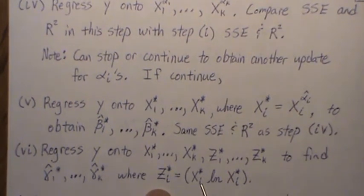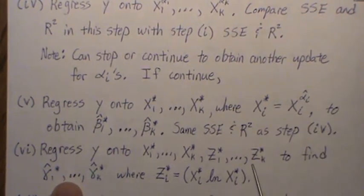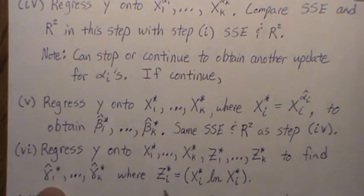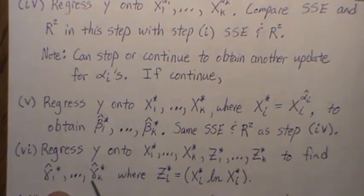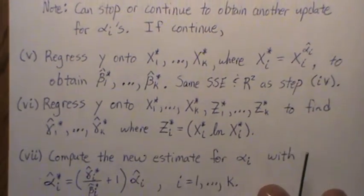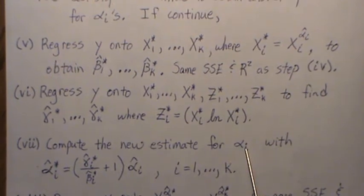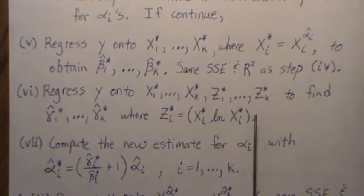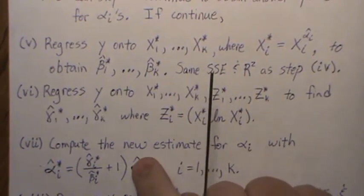Okay, so now we want to regress y onto this model. And it's the same thing where the Z's are X_i star log of X_i, right? And we regress it on all of these to find new estimates for the gammas. So now we have estimates for the betas, we have estimates for the gammas, and we can develop new estimates for the alphas.